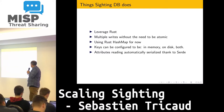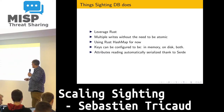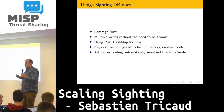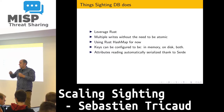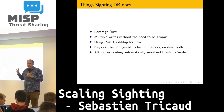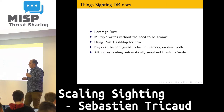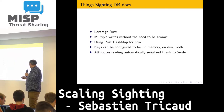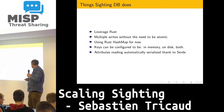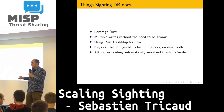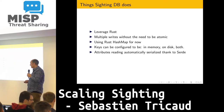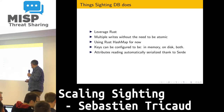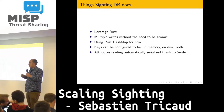Things that SightingDB does: it leverages Rust. I can do multiple writes without being atomic — I don't care because in the database I'm just adding the sum of things since I'm just counting. I'm using a Rust hash map for now to store the namespace, which I could change in the future, but for now it's working. Keys can be configured to be only in memory, only on disk, or both, depending on what you want. Attributes are being read automatically thanks to Serde, which is a Rust serialization library.